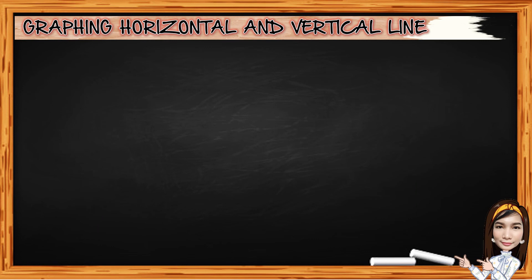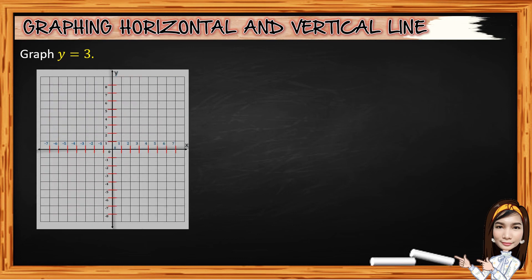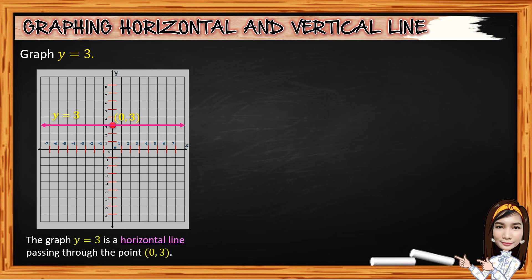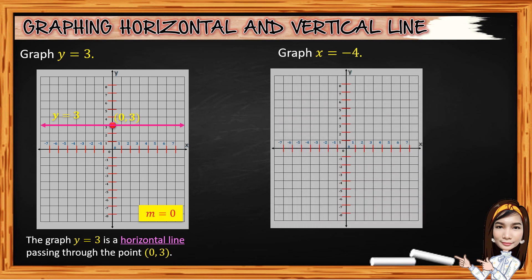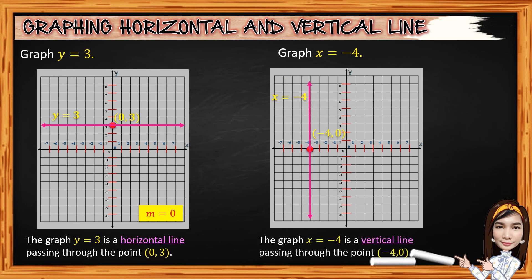Now, let's have graphing linear equations using horizontal and vertical lines. First, graph y equals 3. On the Cartesian plane, the point 0 comma 3 is located along the y-axis above the origin. Draw a line parallel to the x-axis. The graph y equals 3 is a horizontal line passing through 0 comma 3, and the slope equals 0. Second, graph x equals negative 4. That point is on the x-axis to the left of the origin. Draw a line parallel to the y-axis. The graph x equals negative 4 is a vertical line passing through negative 4 comma 0, and the slope is undefined.